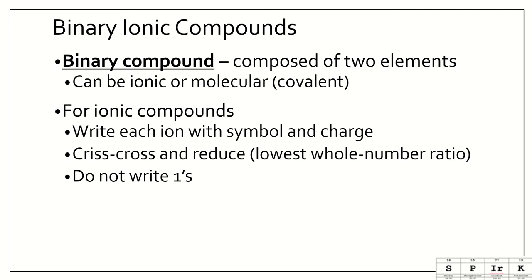So for ionic compounds, all you're going to do is write each ion with the symbol and charge, crisscross and reduce, get the lowest whole number ratio, and we do not write 1s.